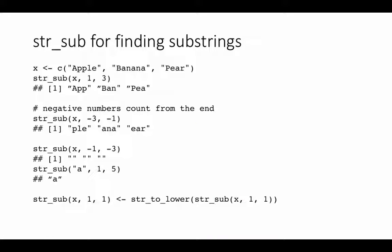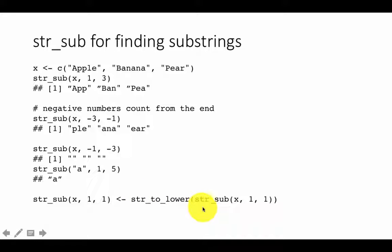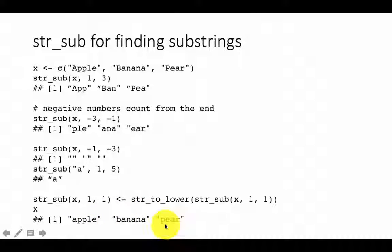You can use str_sub for replacement. So we are saying str_sub X, 1, 1 — that is, replace the first character with the lowercase of the first character. We're taking the first character and converting it to lowercase with str_to_lower. So at the end, you're going to get apple, banana, pear with lowercase a, b, and p. That's how str_sub works.